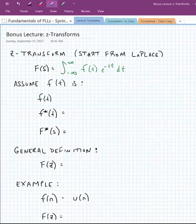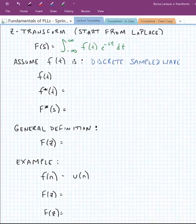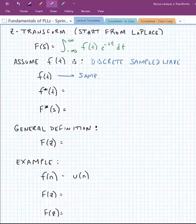Okay, we're going to assume that our function f of t is some kind of discrete sampled wave. So what we're really noting then, is that f of t is sampled at a sampling frequency of f_s, which is equal to 1 divided by t_s, the sampling period.